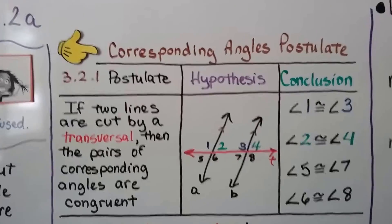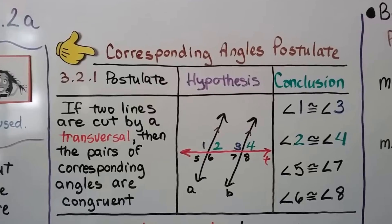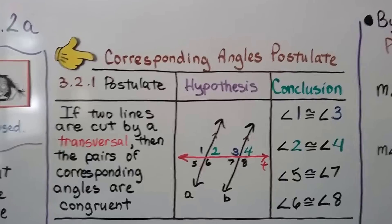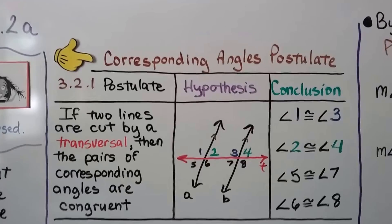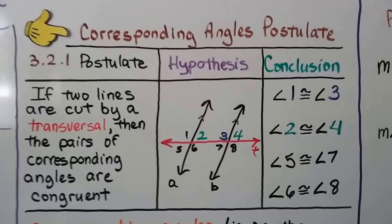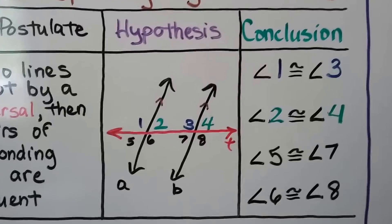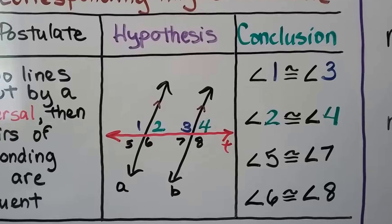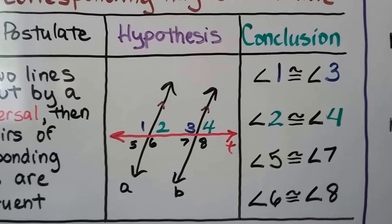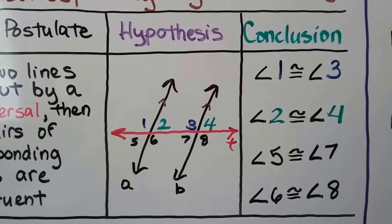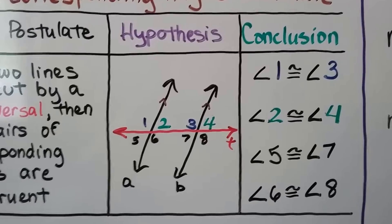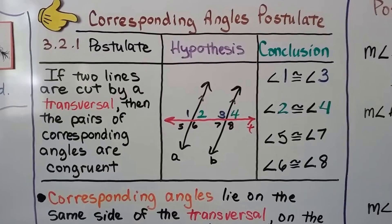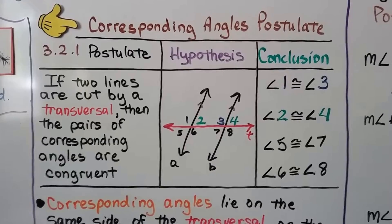Get your pen if you want to write this down. This is the corresponding angles postulate — we have the postulate, the hypothesis, and the conclusion. The postulate says if two parallel lines are cut by a transversal (that's the red line), then the pairs of corresponding angles are congruent. So angle 1 and angle 3 are the same measure, angle 2 and angle 4 are congruent, angle 5 and angle 7 are congruent, and angle 6 and angle 8 are congruent. When angles are on the same side of the transversal and the same side of those lines, they're corresponding angles.